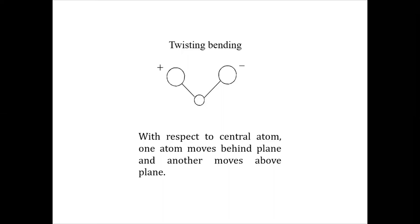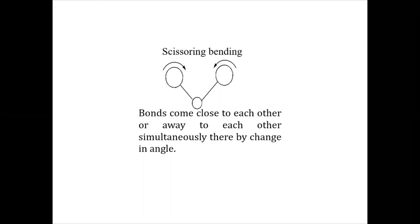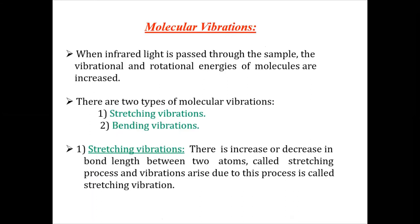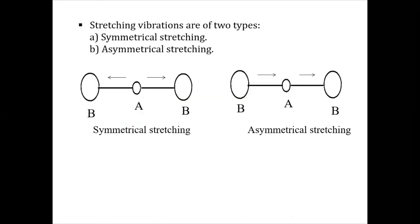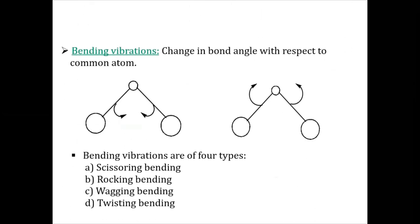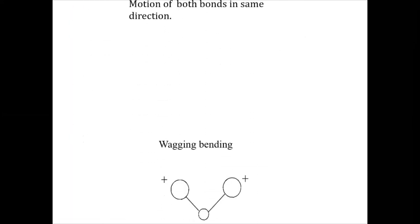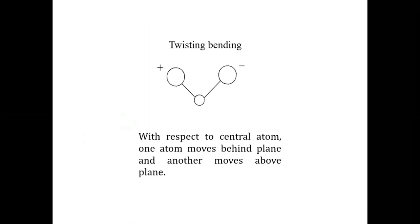To recap: molecular vibrations can be classified into two parts — stretching vibration and bending vibration. Stretching vibration can be further classified into two parts: symmetrical stretching and asymmetrical stretching. Bending vibration can be further classified into four parts: scissoring bending, rocking, wagging, and twisting. These are all the molecular vibrations in IR spectroscopy, also known as vibrational spectroscopy.